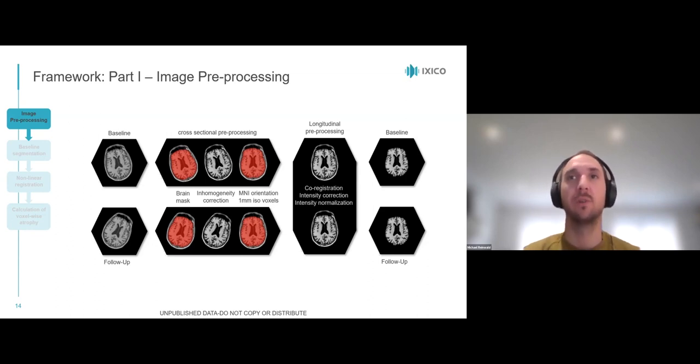The longitudinal part then involves co-registration of the two scans so that they perfectly overlap one another, and additional intensity corrections and normalizations. The result is two scans, baseline and follow-up, that are perfectly overlapping and free from any intensity inhomogeneities.